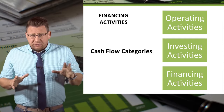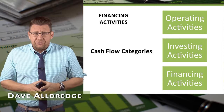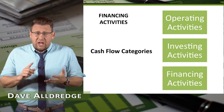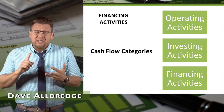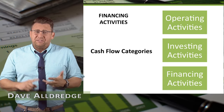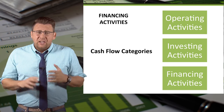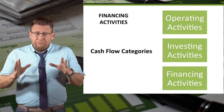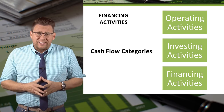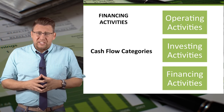The Statement of Cash Flows is divided into three categories: operating activities, investing activities, and financing activities. This video will focus on the financing activities section.